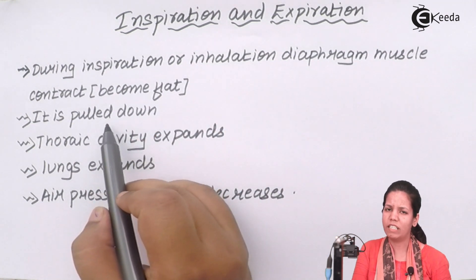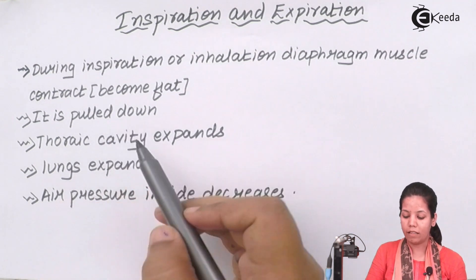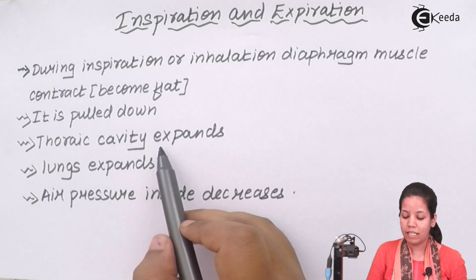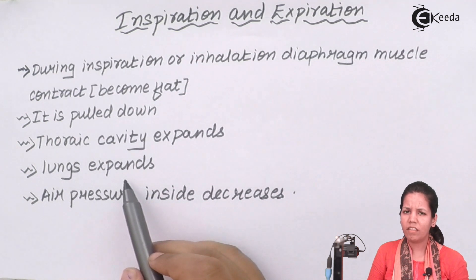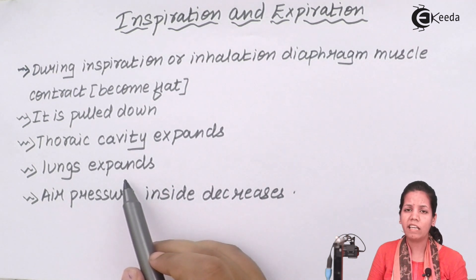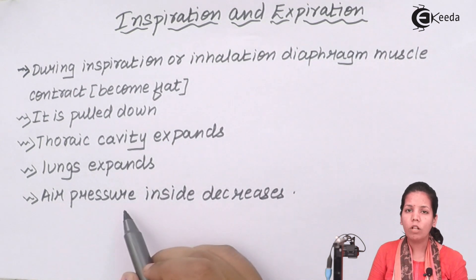Now obviously if diaphragm is pulled down don't you think so a little bit space is created. And if a space is created we could say that thoracic cavity expands. Now if thoracic cavity expands obviously your lungs are going to expand.